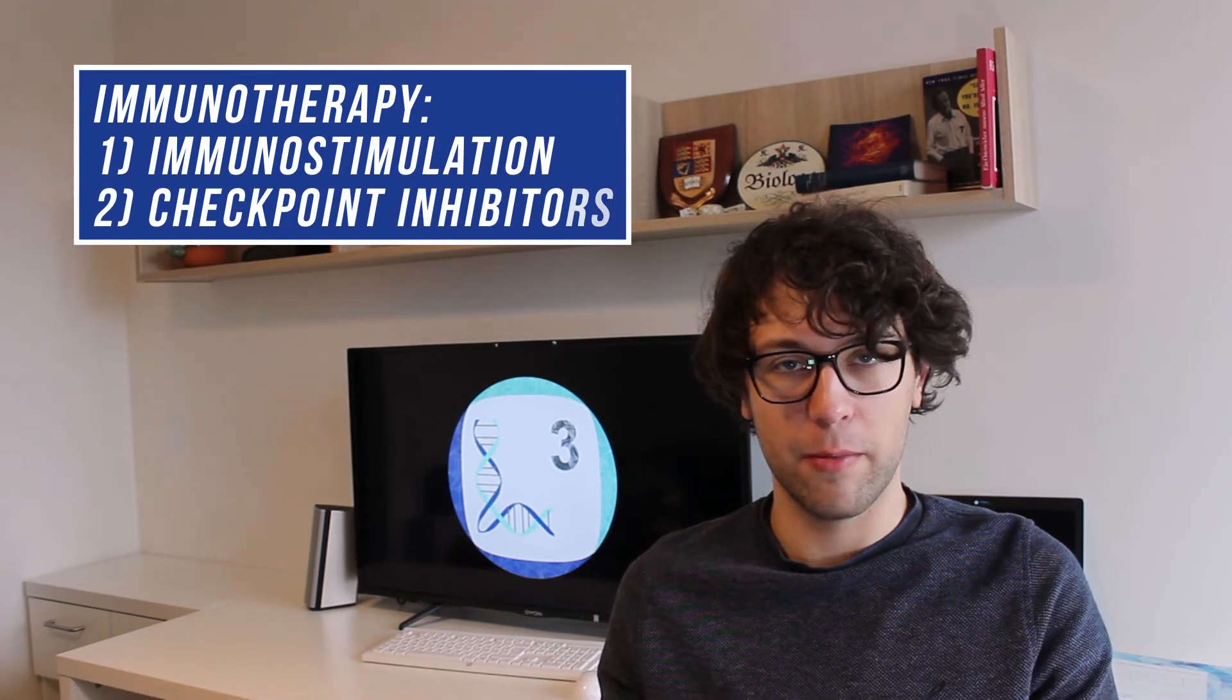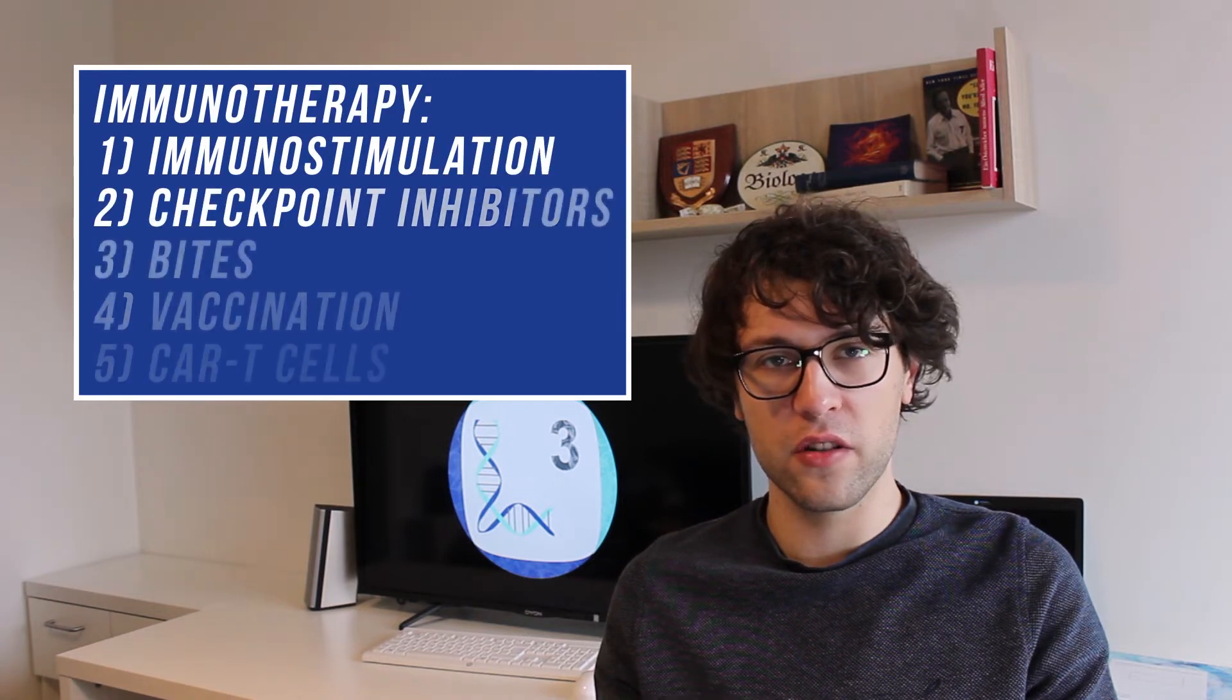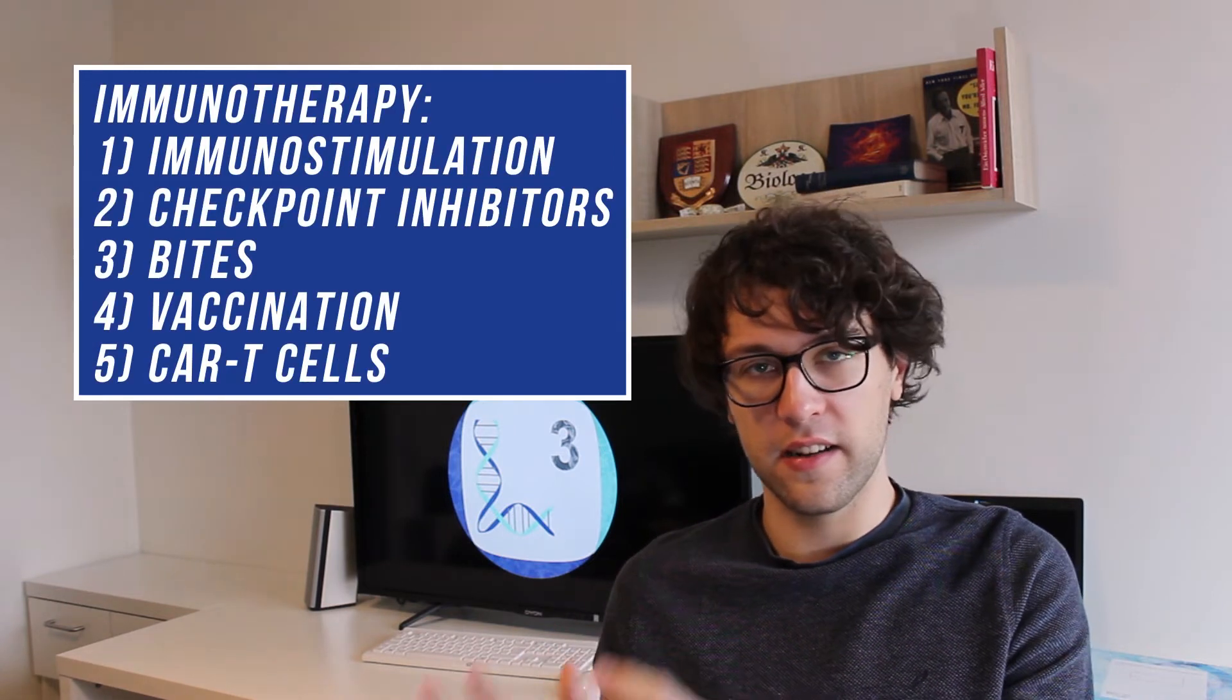Last time we talked about immunostimulation and checkpoint inhibitors. While immunostimulation uses molecules such as cytokines in order to locally provoke immune responses, checkpoint inhibitors disable the acquired function of cancer cells to shut down the immune system. Besides these two forms of immunotherapy we also know bispecific T-cell engagers, vaccination, and CAR T-cells. And in this episode we will talk about CAR T-cells as they are highly remarkable and deserve their own episode.